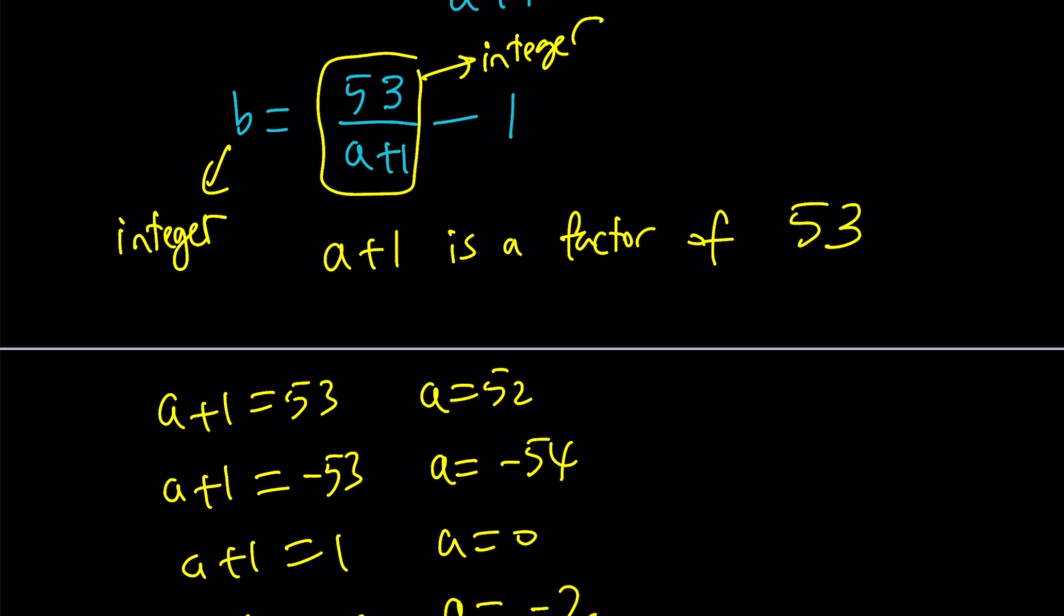And then, of course, to find the b values, you can just plug those in. Not these ones, but these ones. For example, if a plus 1 is 53, then from here, b is equal to 53 divided by 53 minus 1, which is 0. And then if a plus 1 is equal to negative 53, then we get negative 1 minus 1, which is negative 2. And then if a plus 1 is 1, then we get 53 minus 1, which is 52. And finally, if a plus 1 is equal to negative 1, this gives us negative 54 for b.